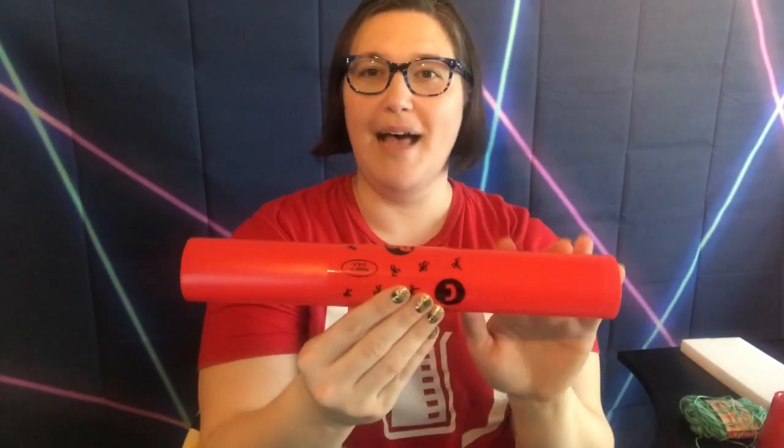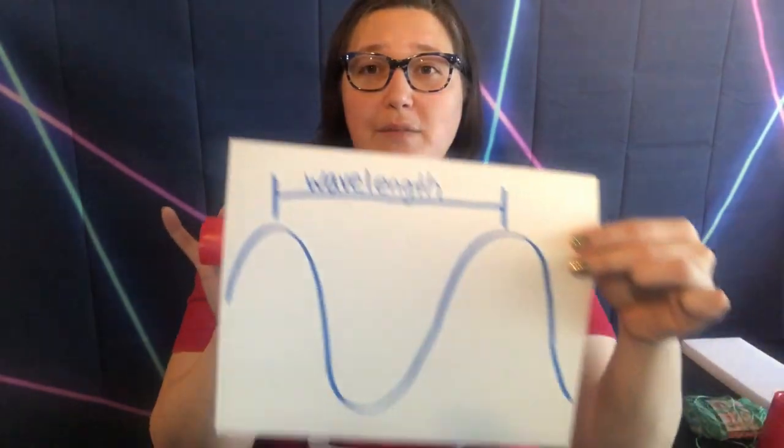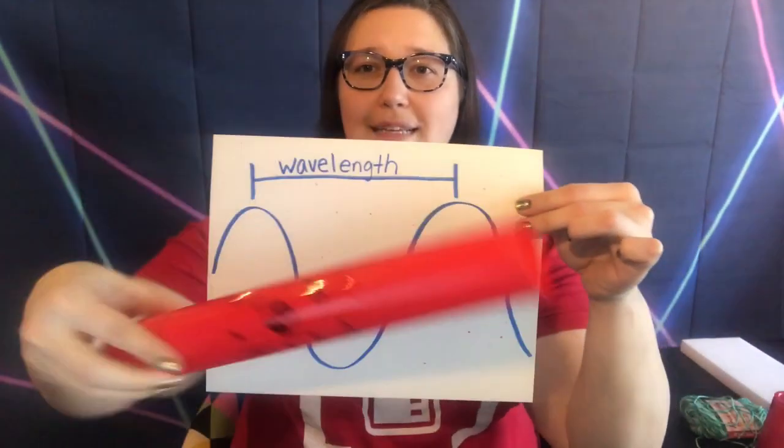I have some musical instruments here called boomwhackers. They're simply a plastic tube that's hollow. Air goes in one end and comes out the other end, and vibrations are produced inside the tube when I hit it on my hand, like so. What's happening in this tube is we have these sound waves right inside, going up and down.